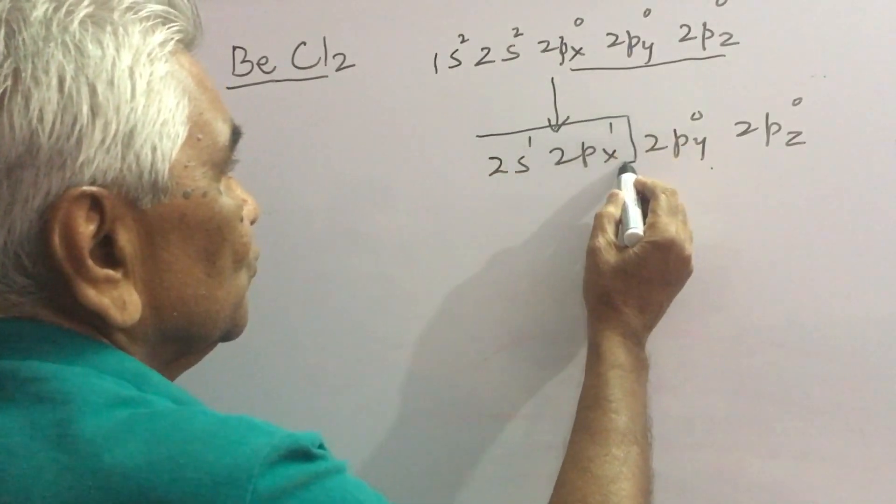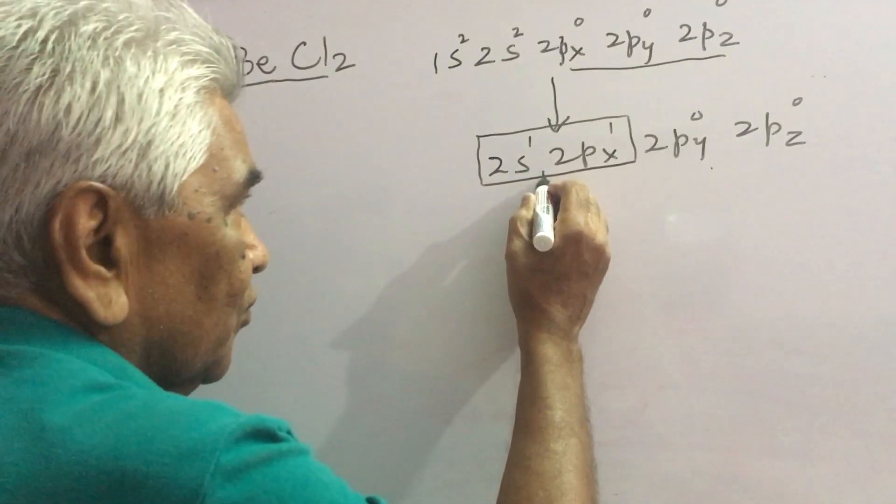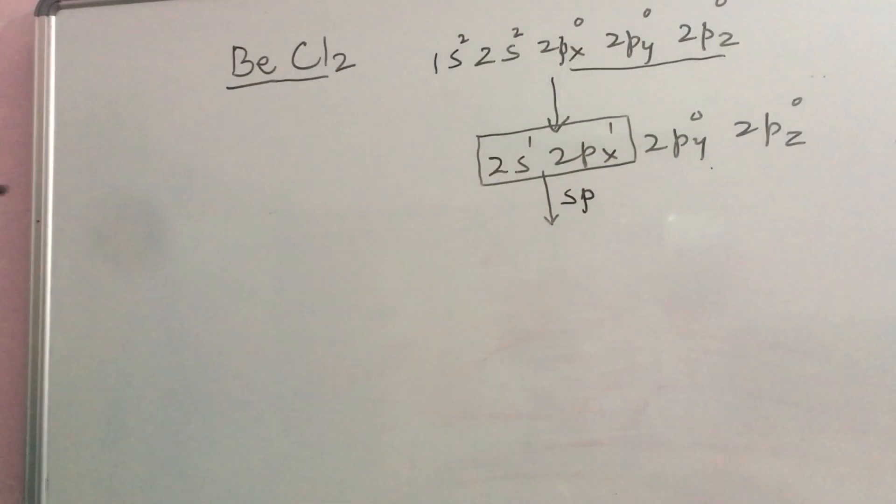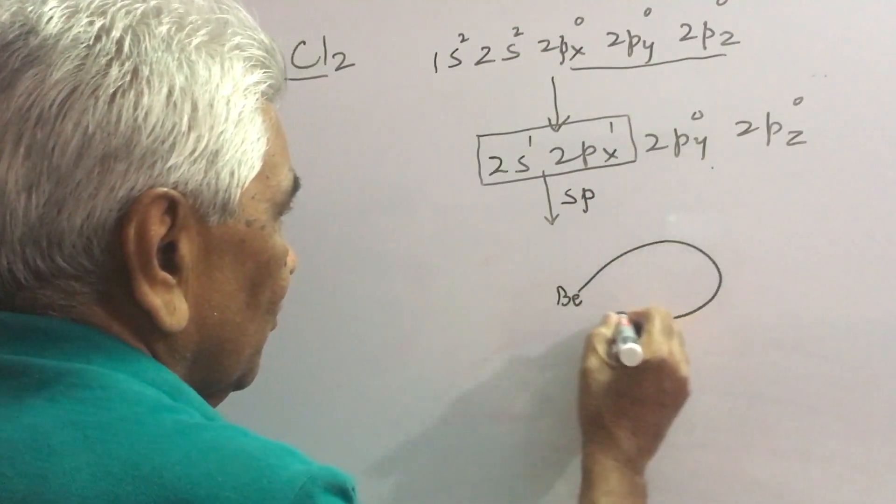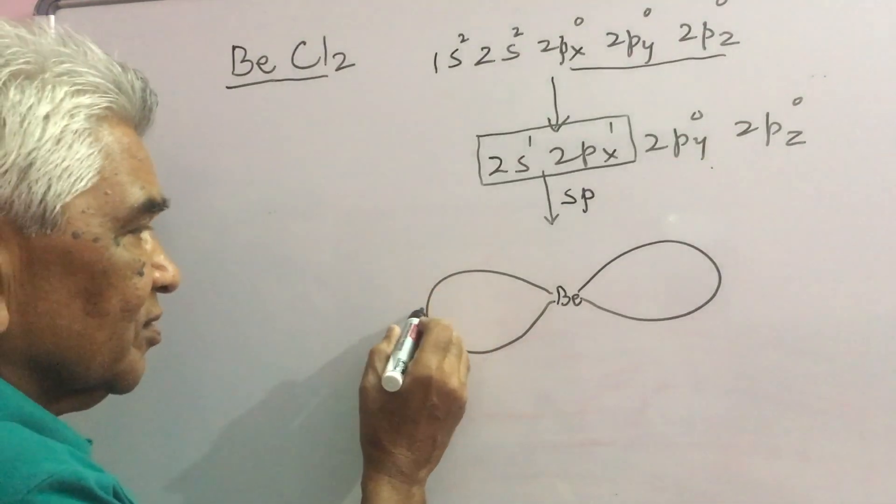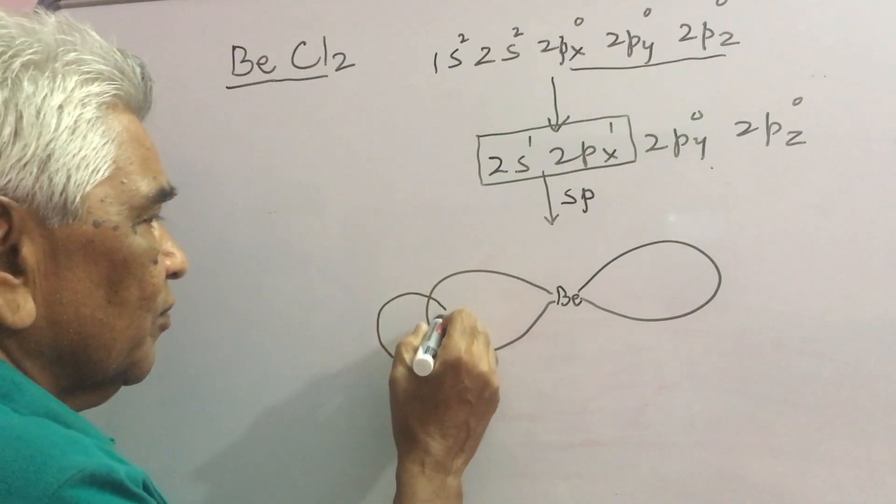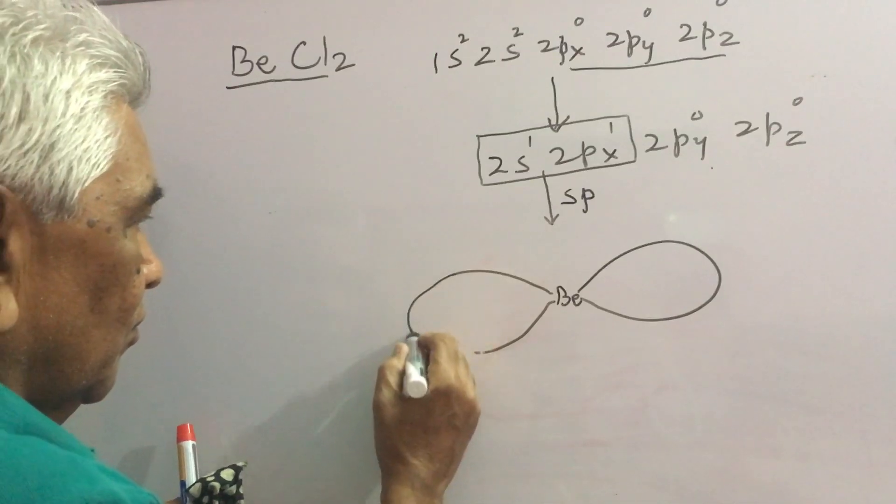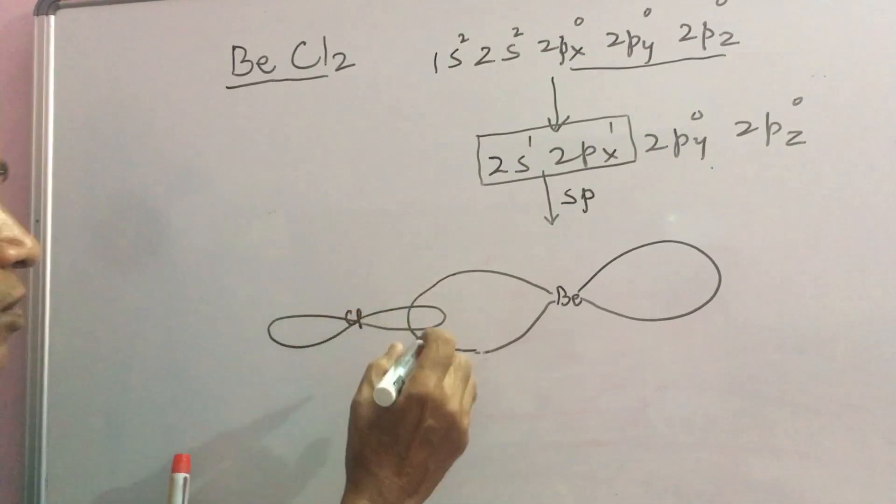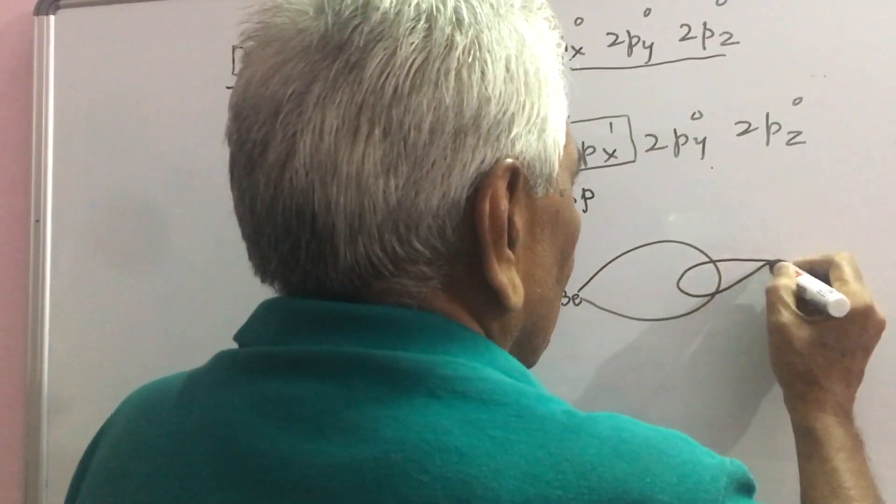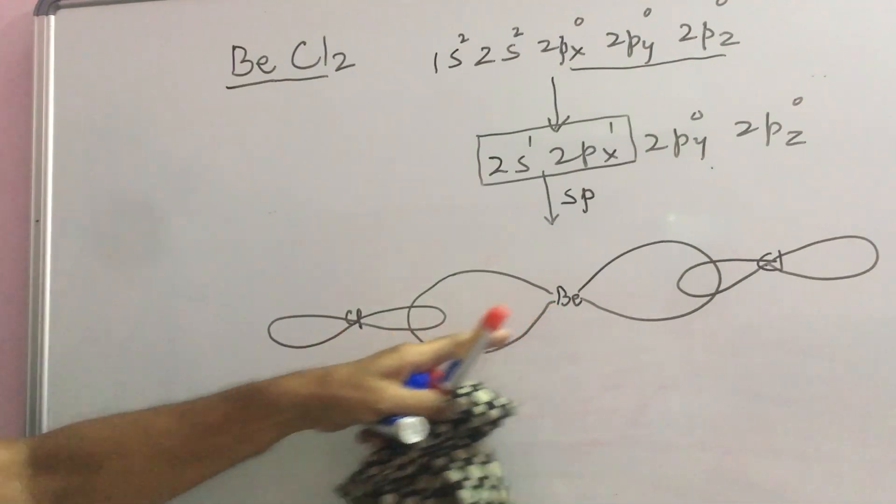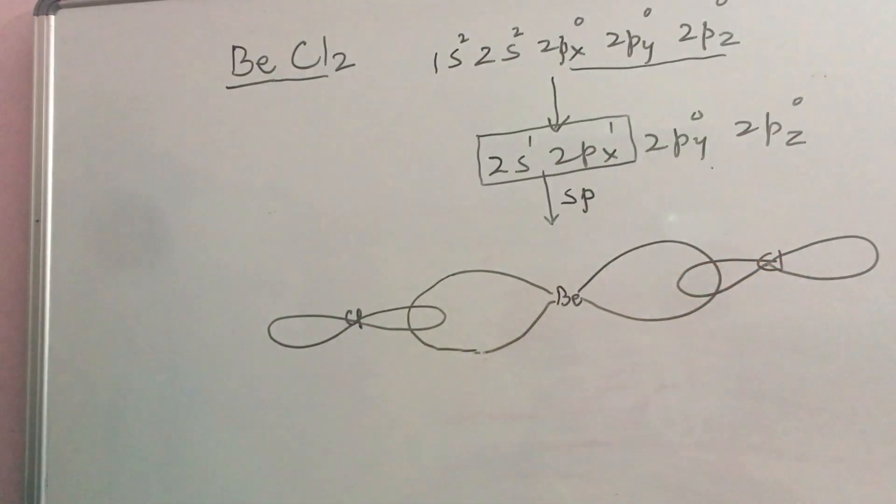Here again these 2 orbitals blend and form by sp hybridization 1s and 1p contribution. So, beryllium has 2 sp orbitals. This reacts with chlorine by overlapping of p orbital of chlorine. This was chlorine and here another chlorine.